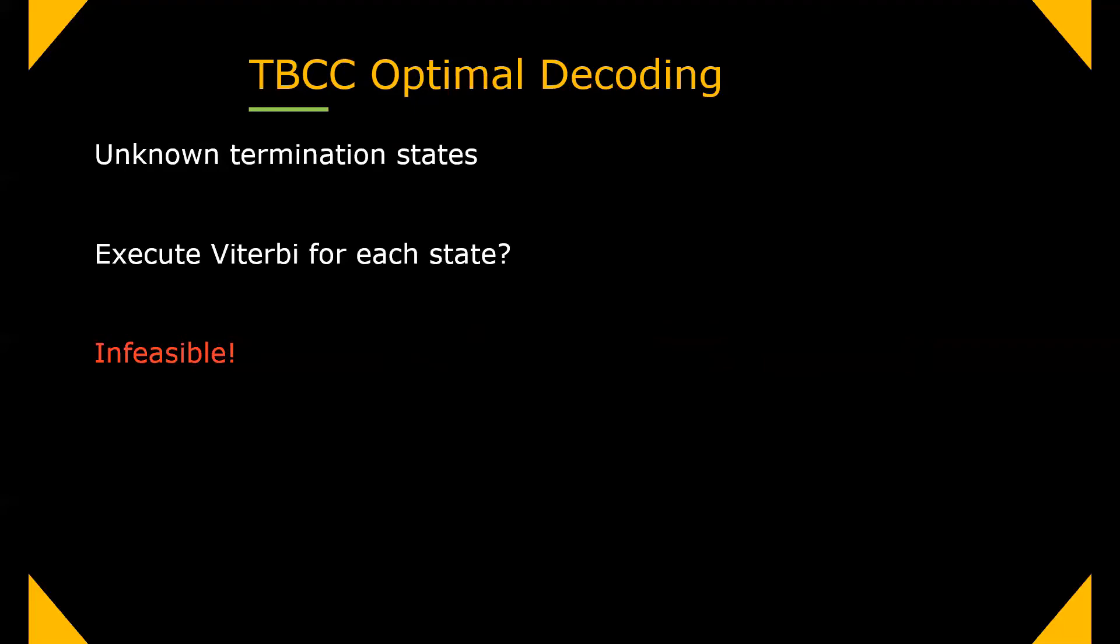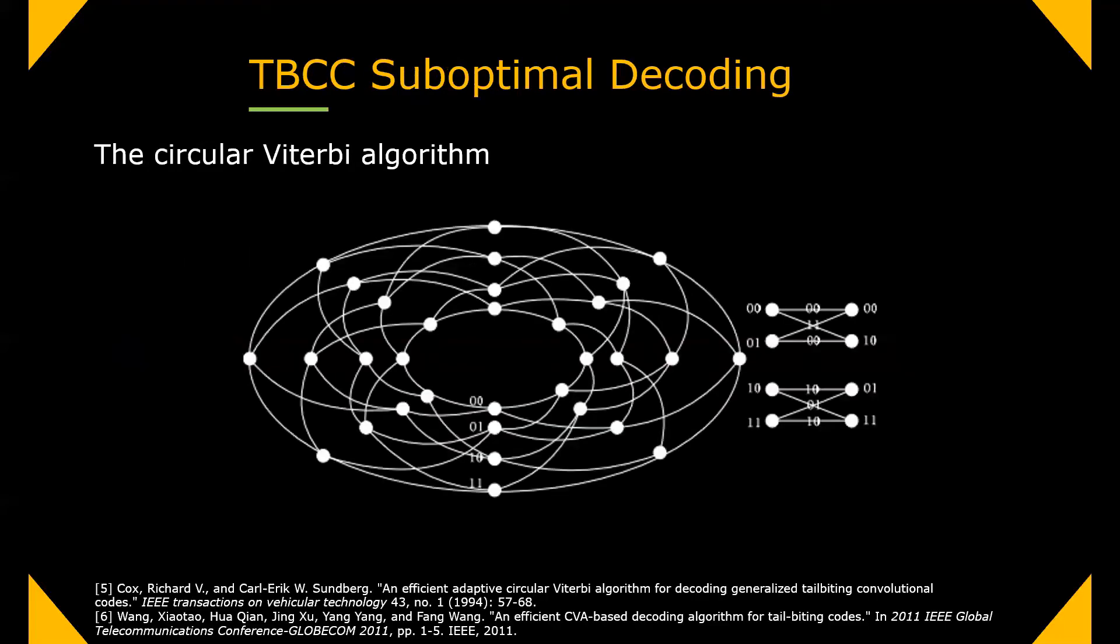Well, a brute force approach is to run a Viterbi from each state and output the most likely path. This is indeed optimal but infeasible as the number of states increases. So another approach is the reduced complexity circular Viterbi algorithm, or CVA. This algorithm exploits the circular nature of the trellis, decoding on repetitions of the LLR word. However, the CVA and other algorithms built on this one are suboptimal and require many repetitions, especially for short TBCC, such as the one in 4G LTE.